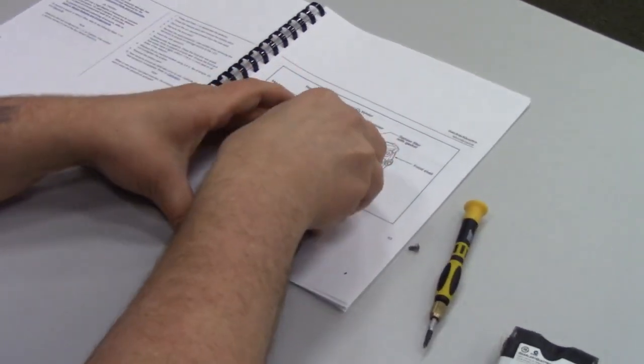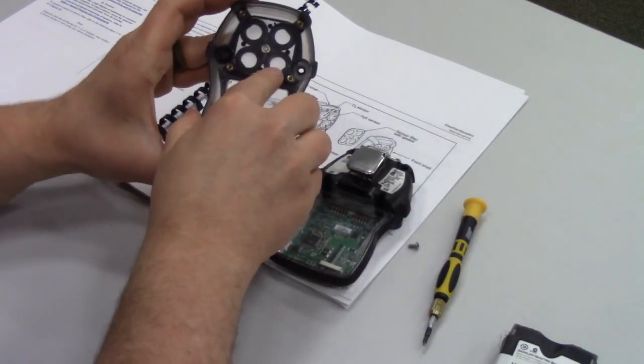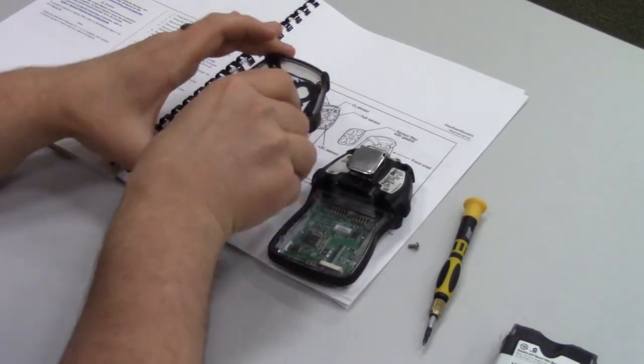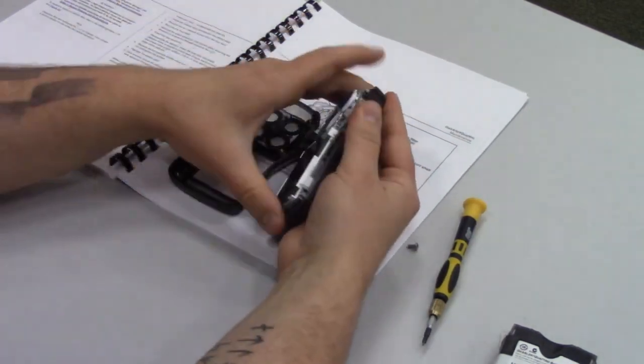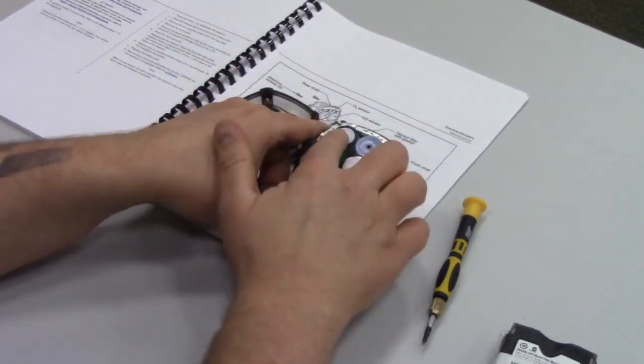Once you have those screws loose, you can then pop that off. Just make sure this filter here stays right in place if it doesn't need replacing. All right, so once you have it flipped over, this sensor right here—you can see on the diagram—is the O2 sensor.